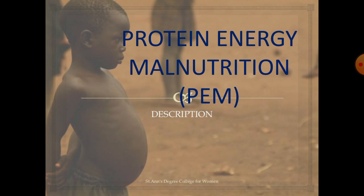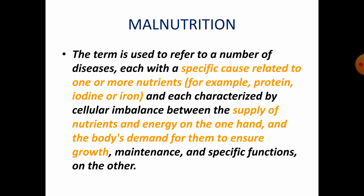There is deficiency of proteins as well as energy for the proper functioning of the body. The term malnutrition is used to refer to a number of diseases, each with a specific cause related to one or more nutrients like proteins, iodine, or iron, and each is characterized by the cellular imbalance between the supply of nutrients and energy on one hand and the body's demand for them to ensure growth, maintenance, and specific functions on the other.